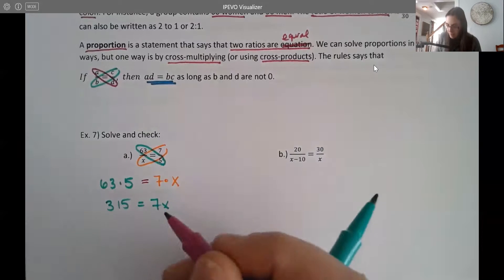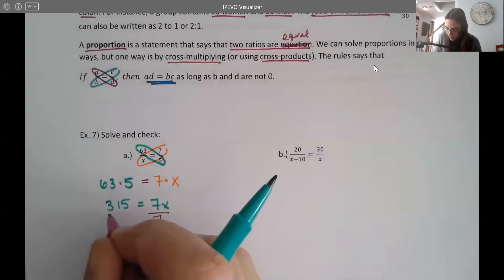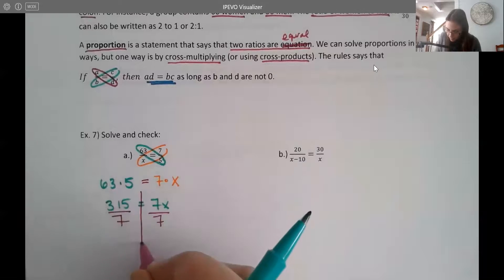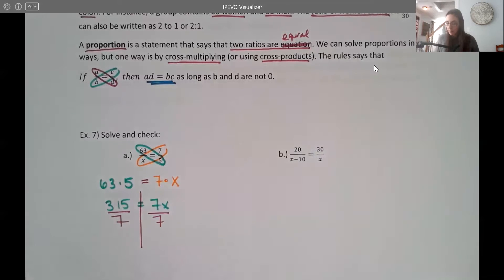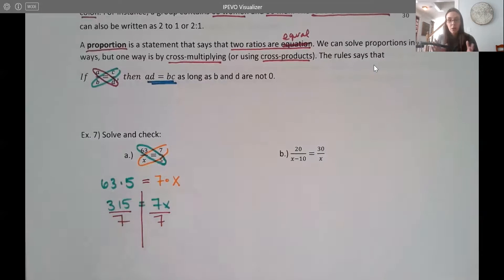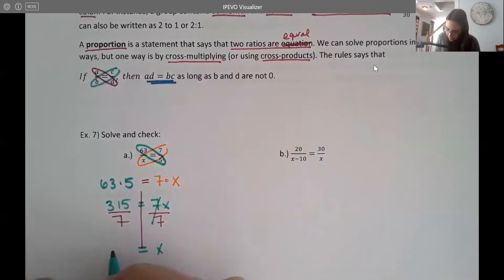And now you should have a pretty simple equation to solve. So our last step here is going to be to divide to get rid of the 7 on both sides. So I'm just using that same solving technique. The nice thing with these is that you don't usually have, it's not too complicated once you multiply, which tends to be nice. And when I go ahead and divide, 315 divided by 7 is 45.